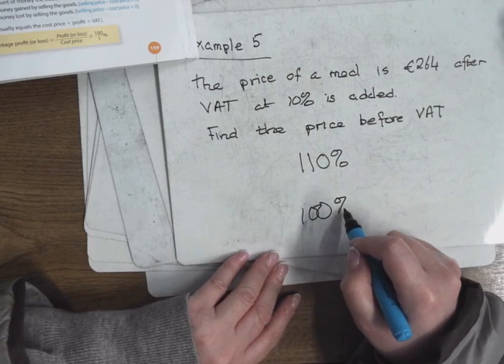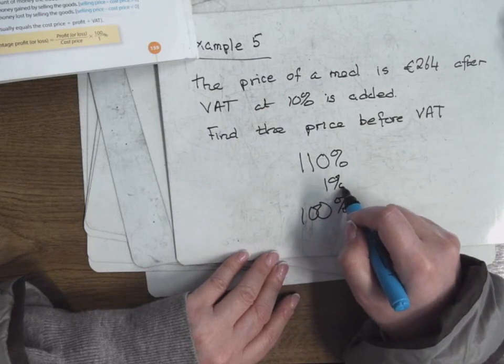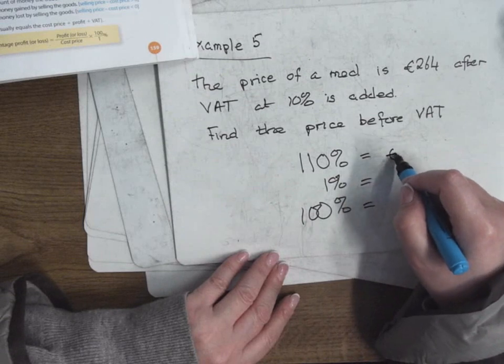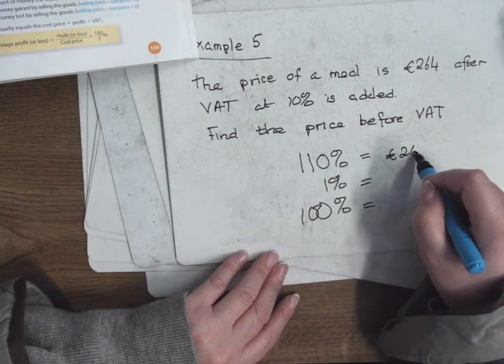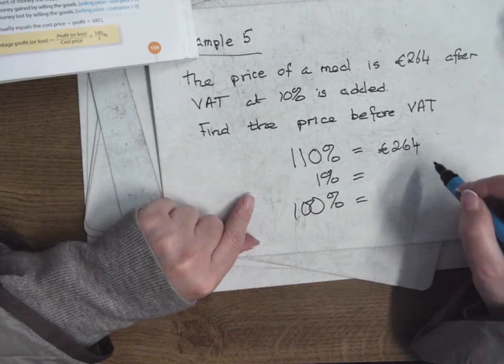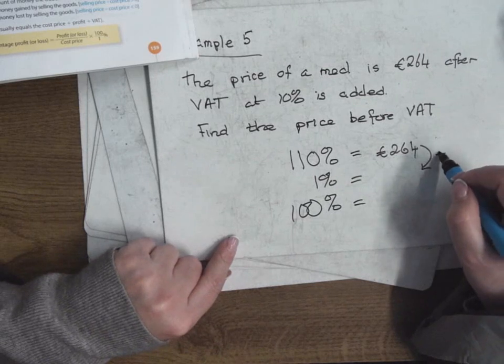So I want to go back to 100%. So I always go down to 1 in the middle, isn't it? So this time I'm starting with the final bill which is €264, and I want to go back to the bill before the VAT was added. Right? So how do I go from 110 down to 1?